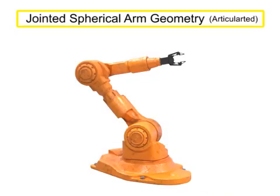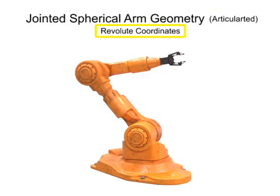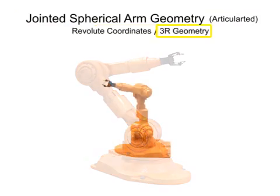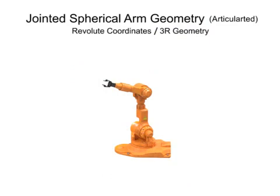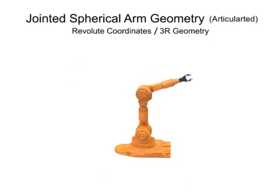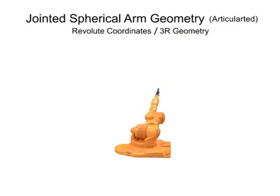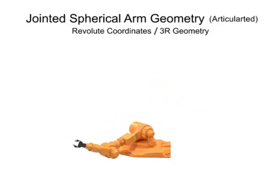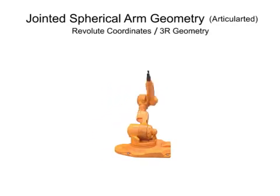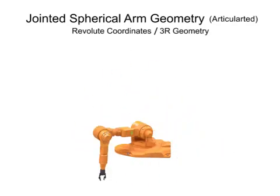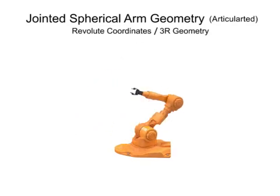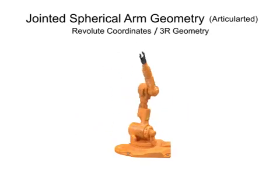Jointed spherical arm geometry robots have rotation in three directions, use revolute coordinates, and are given the designation of 3R. They are one of the most popular types of robotic arms and most accurately mimic the movement of the human arm. Robotic arms with jointed spherical, or articulated geometry, rotate on at least three axes.